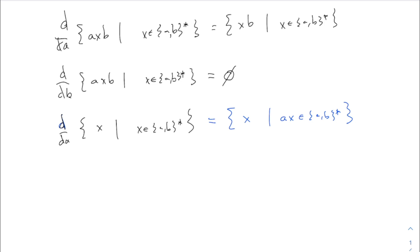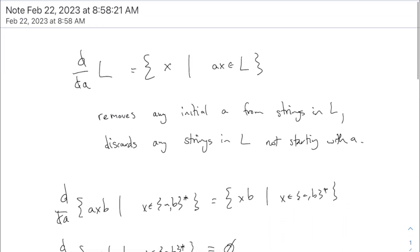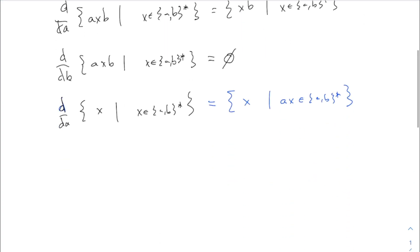Actually, that's just the definition of the derivative with respect to 'a': it's x such that ax is in what you started with — x such that ax is in (ab)*. What exactly are those strings? I think there's a better way to write this answer. What kinds of strings are there such that 'a' followed by that thing is any string? What does x have to look like?